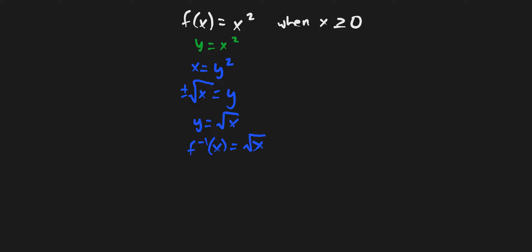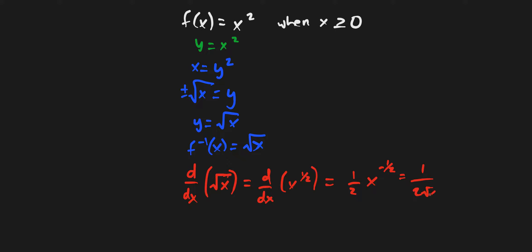Now we find the derivative of root x. Using Leibniz notation, the derivative of x to the one-half power is, by the power rule, one-half times x to the negative one-half, which simplifies to one over two root x. This is the derivative of the inverse function.